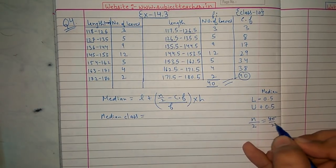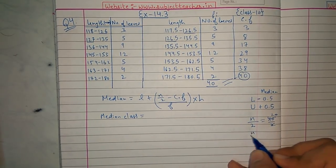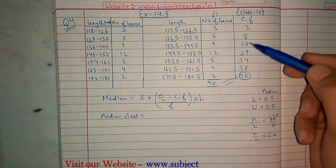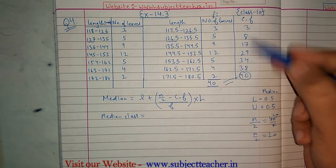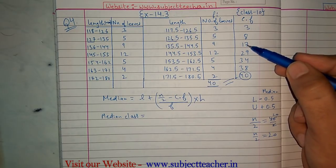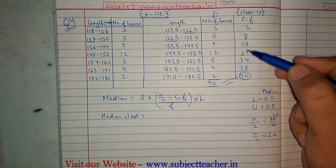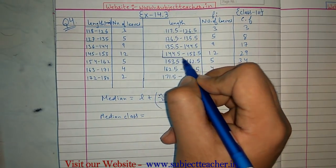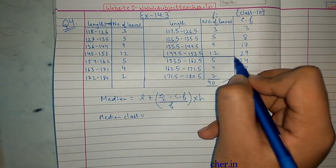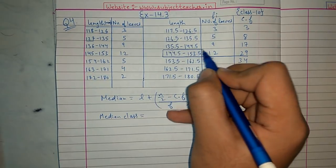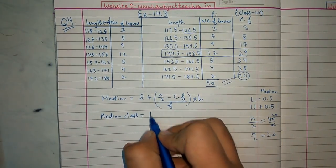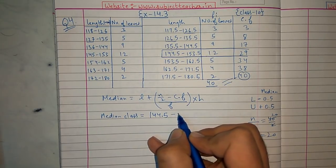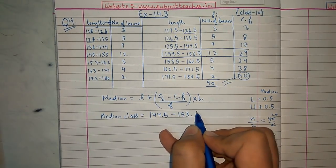Now, n by 2 is 40 by 2, which is 20. I look for the CF value just greater than 20. The CF of 17 is less than 20, and the next CF is 29, which is just greater than 20. So the median class is identified.